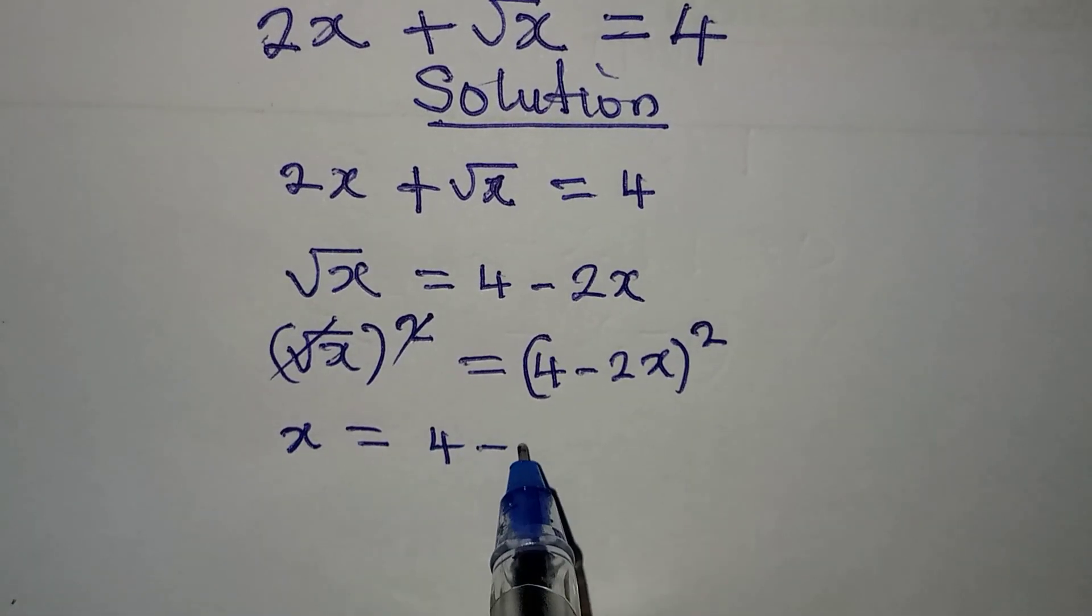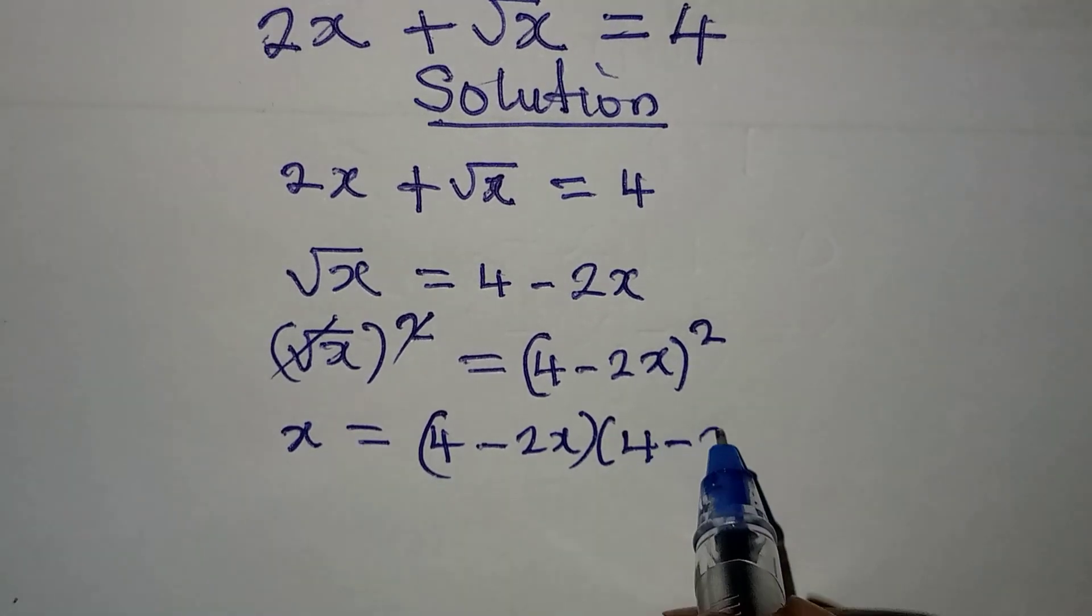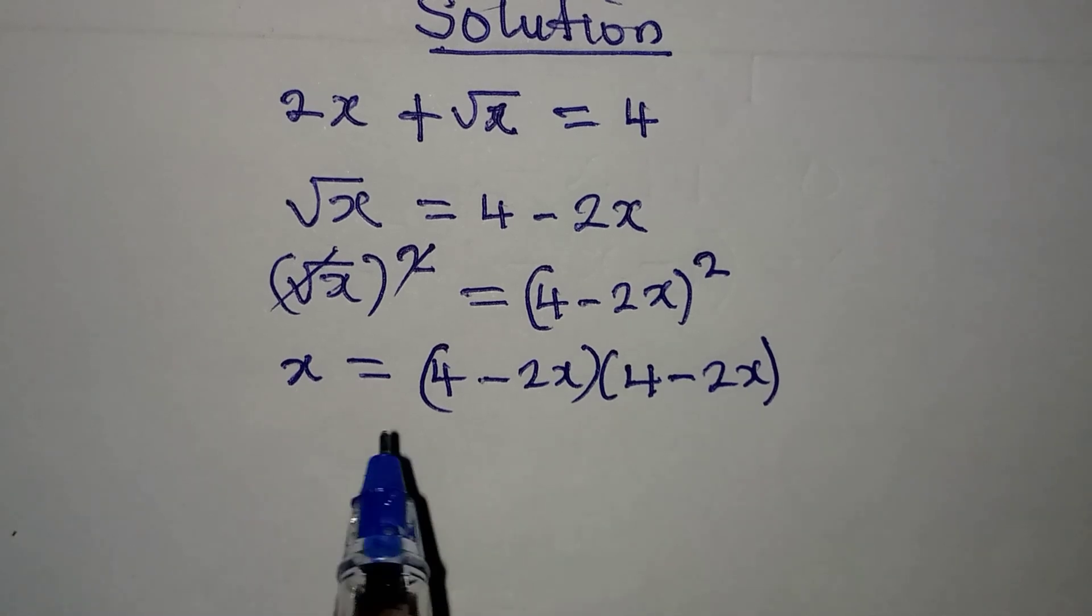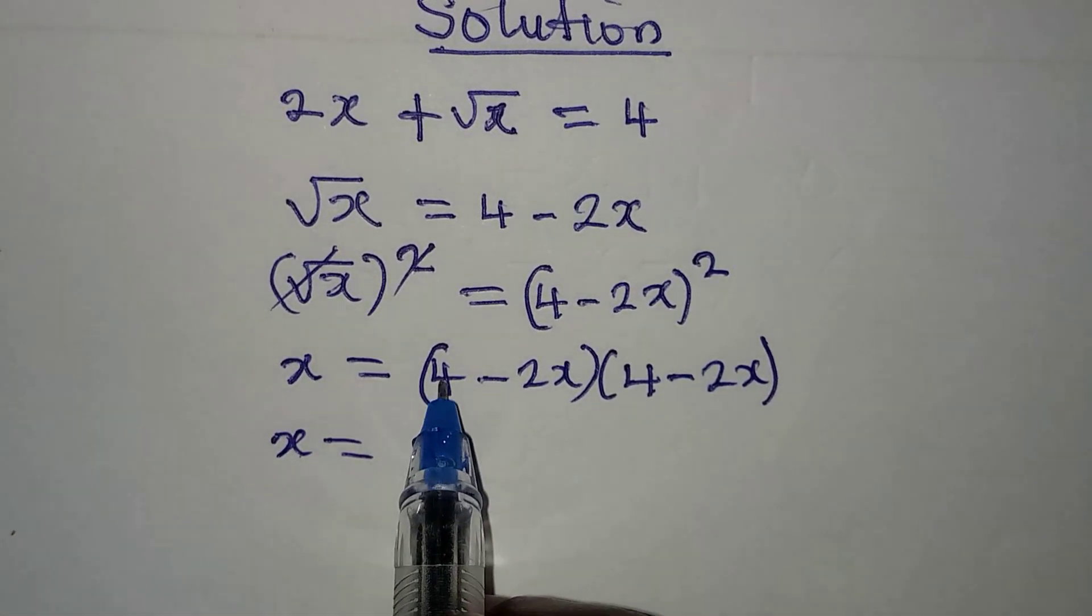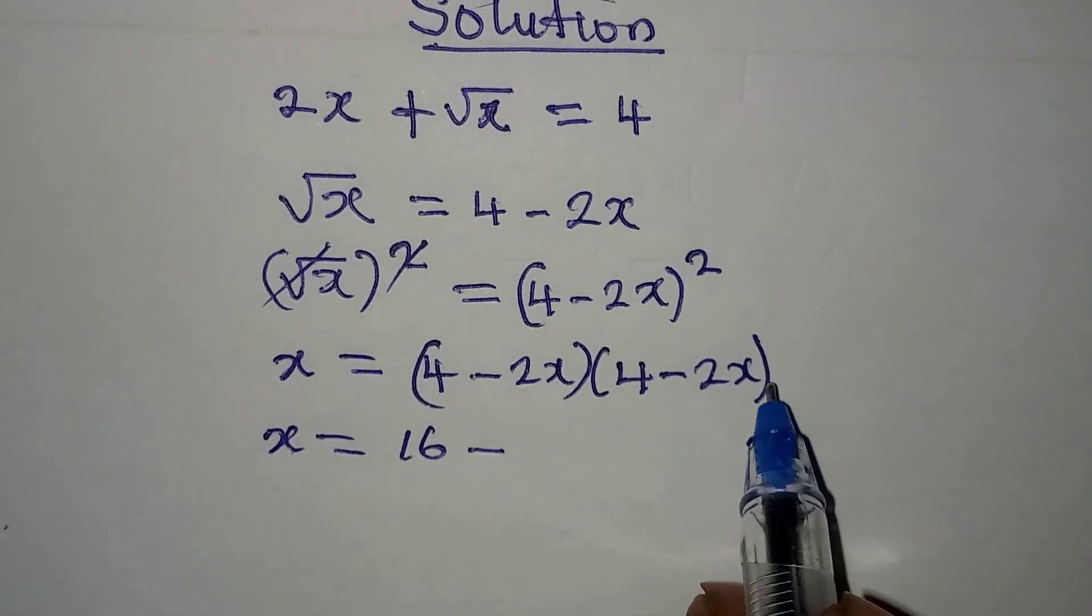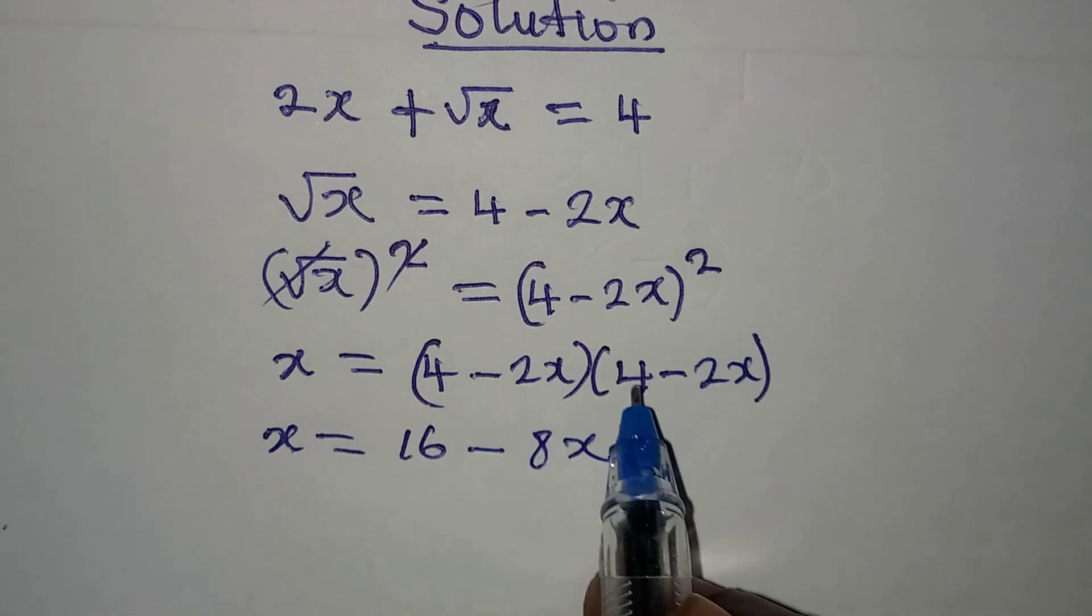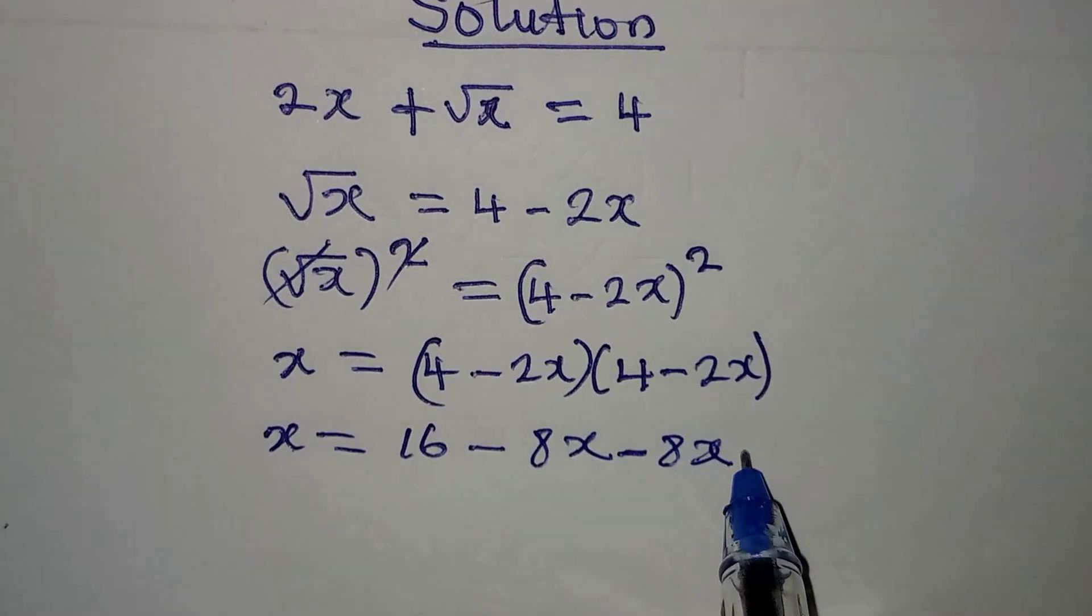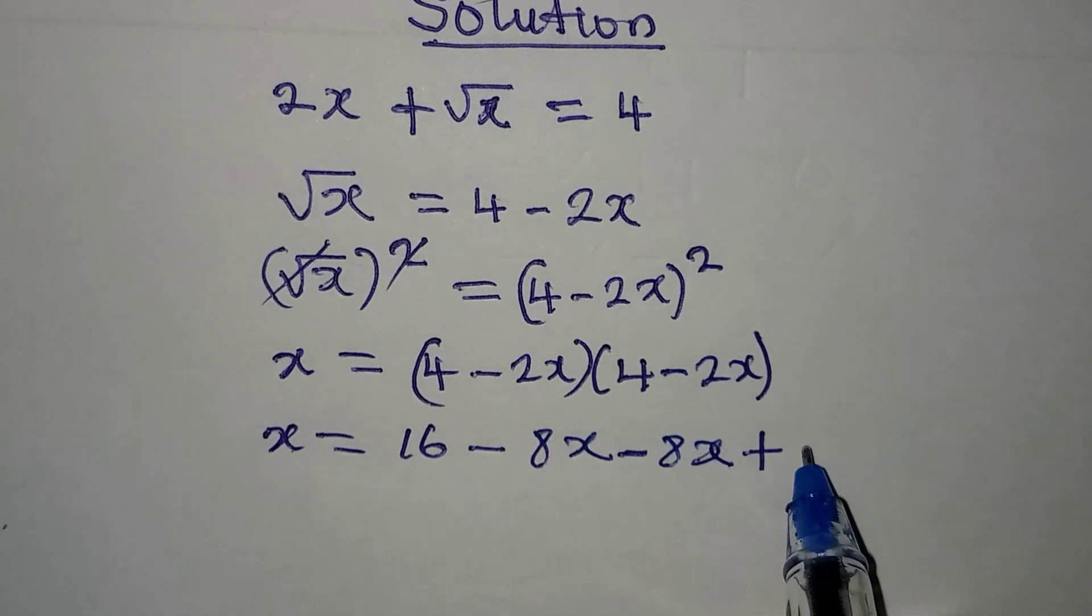So that's how you expand. Our x will be 4 times 4, which is 16, minus 4 times 2x, that's 8x, then -2x times 4 is -8x, then plus -2x times -2x gives us +4x².